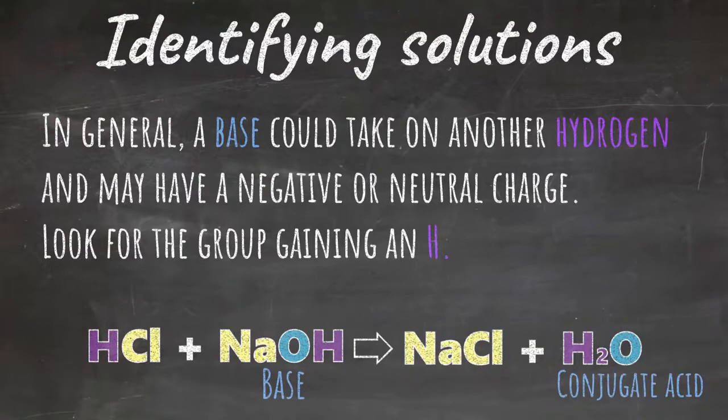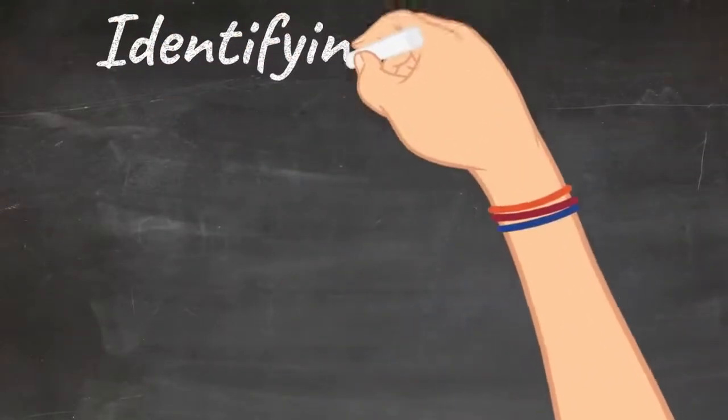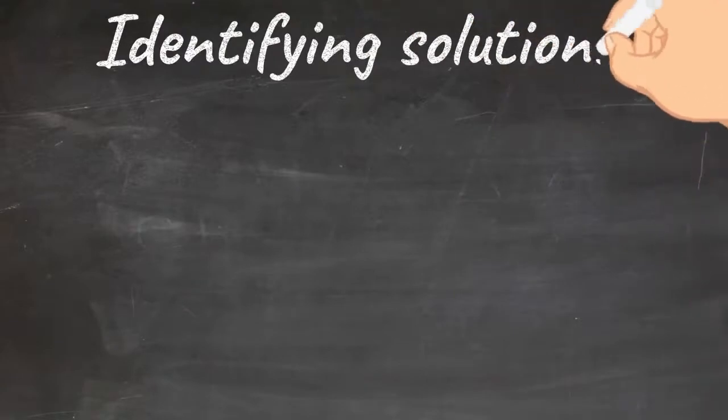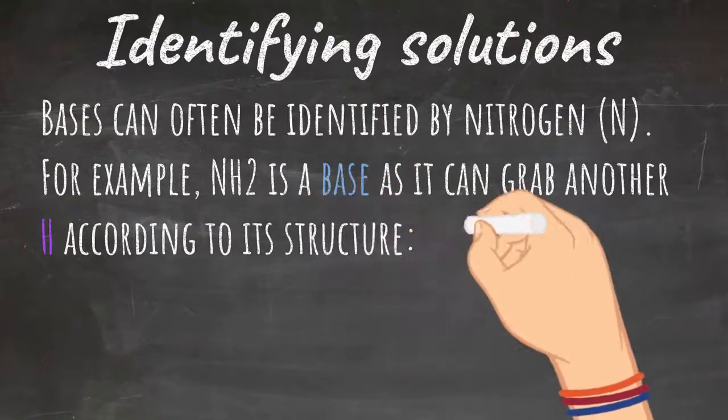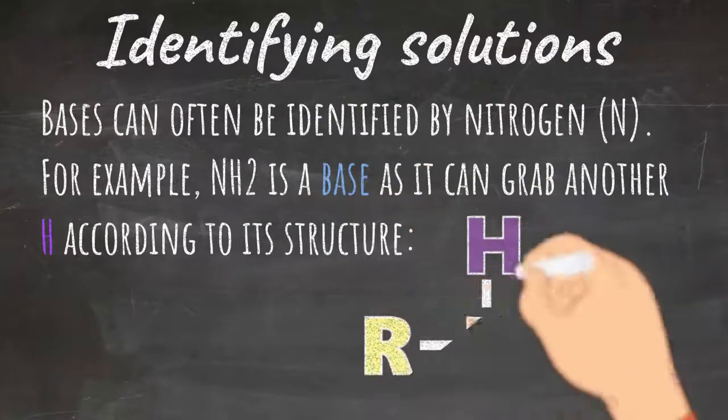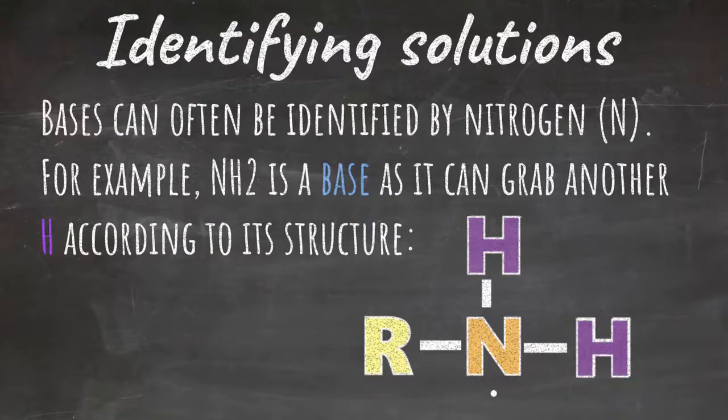This is easily identified because the spectator ion, the spectator atoms, Na, leaves, and hydrogen replaces it. Bases can often be identified by the presence of nitrogen. In the amino acid, the NH2 is a base, as it can grab onto another hydrogen according to its structure. As you can see, there is still one electron waiting to be attached to.